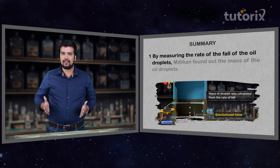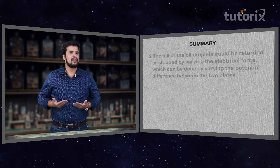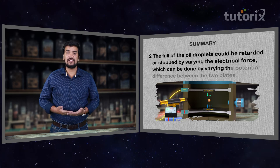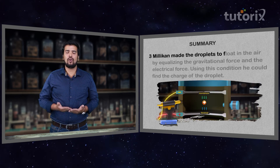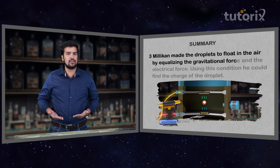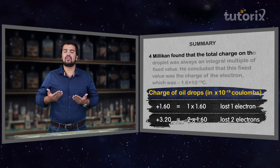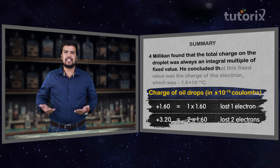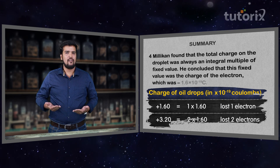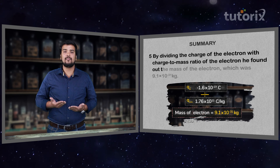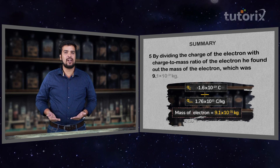To know the answer to these questions, stay tuned. Let's summarize: by measuring the rate of fall of the droplet, Millikan found the mass of the droplet. The fall could be retarded or stopped by varying the electrical force through changing the potential difference between the two plates. Millikan made the droplet float by equalizing gravitational and electrical force, and used this condition to find the charge of the droplet. He found that total charge was always a multiple of a fixed value — the charge of the electron — which was 1.6 × 10⁻¹⁹ coulombs. By dividing this by the charge-to-mass ratio from Thomson's experiment, he found the mass of the electron to be 9.1 × 10⁻³¹ kg.